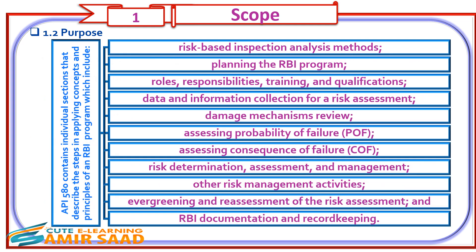API 580 contains individual sections that describe the steps in applying concepts and principles of an RBI program, which include: Risk-based inspection analysis methods; Planning the RBI program; Roles, responsibilities, training, and qualifications; Data and information collection for a risk assessment; Damage mechanisms review; Assessing probability of failure; Assessing consequence of failure; Risk determination, assessment, and management; Other risk management activities; Evergreening and reassessment of the risk assessment; and RBI documentation and recordkeeping.